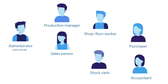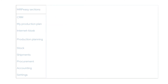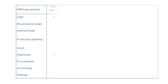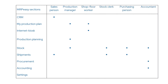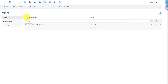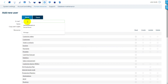The set of rights depends on the user's role in the system. The typical roles in the system are Sales Manager, Production Manager, Shop Floor Worker, Stock Manager, Purchasing Manager, Accountant, Administrator, and General Manager. Accordingly, you can grant them different rights to act in the system.